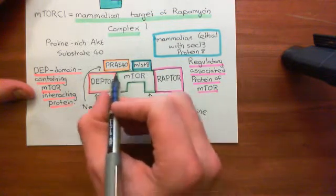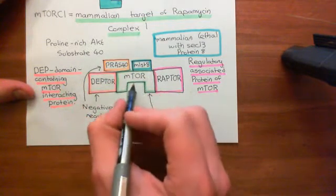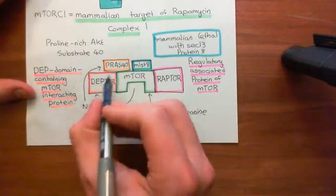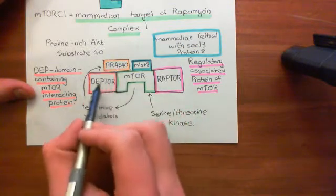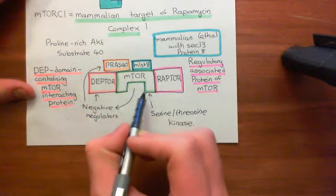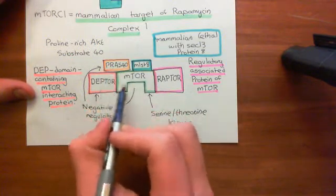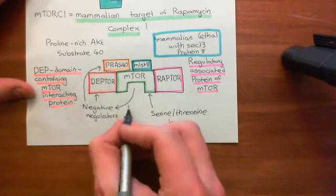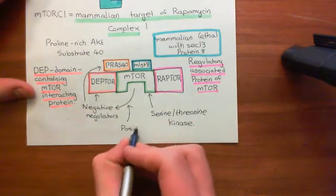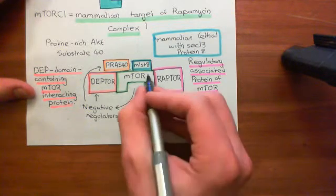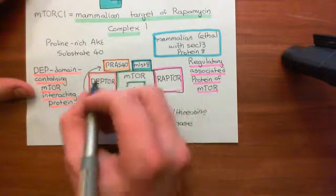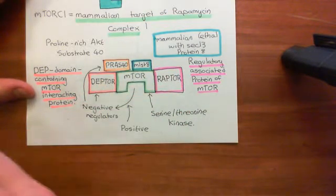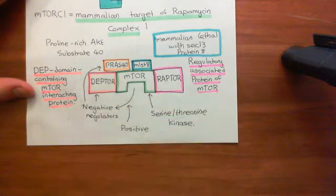Once you activate mTOR, what it actually does is phosphorylate these negative regulators itself. It phosphorylates DEPTOR and PRAS40, and they then loosen their bonds to it. They change their interactions with mTOR and stop negatively regulating it. This functions as a positive feedback loop, whereby activation of mTORC1 can actually increase its own activation by phosphorylating these associated subunits, increasing mTOR activity.